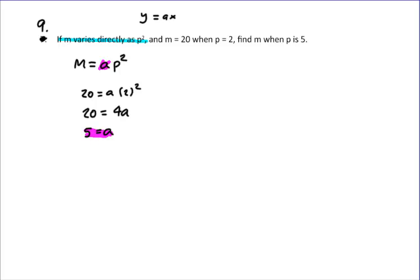So once we have A, A never changes. A is always going to be 5, no matter what. So we can then come through here and look at all sorts of different values for X and find the different values that match for Y. The second part of the question then says, find M when P is 5.